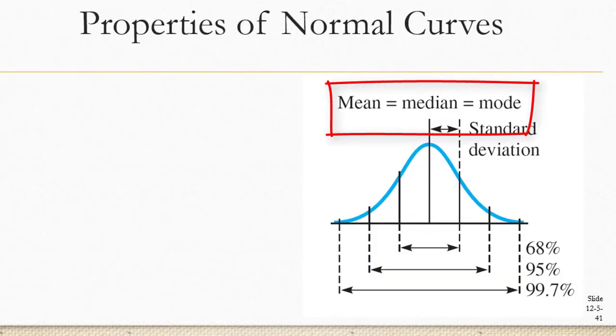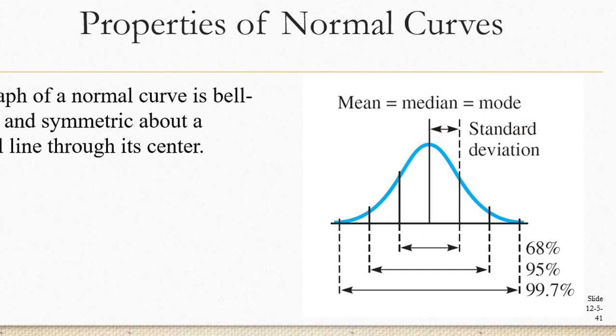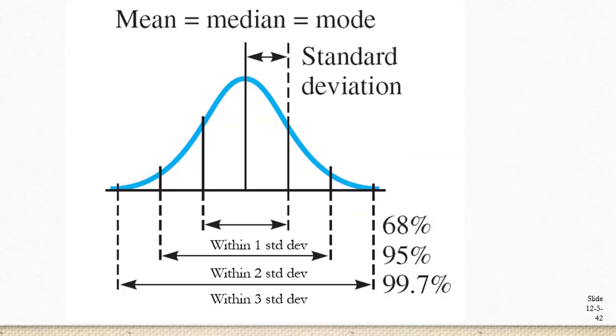In every normal distribution, the mean is equal to the median, which is equal to the mode. So the graph of a normal curve is bell-shaped and symmetric about a vertical line through its center.